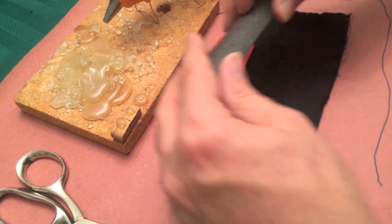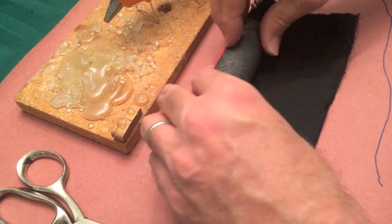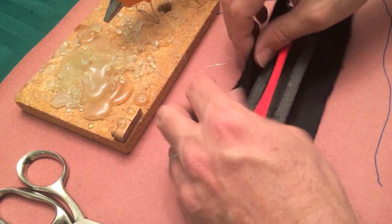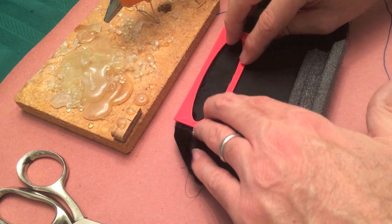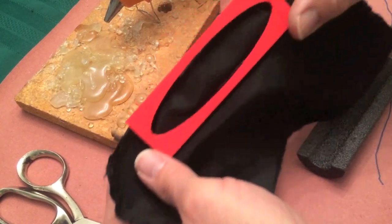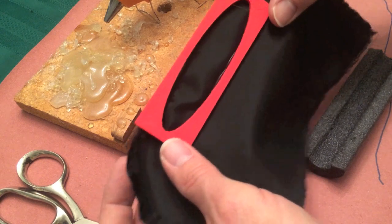So the idea here is that when you roll it around, you want to get the velvet stretched nice and taut across this spongy curved surface. That's looking pretty good.